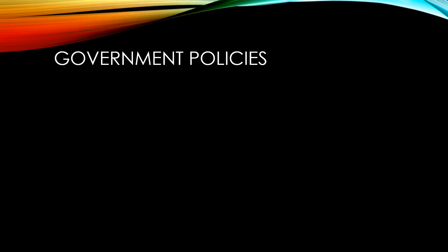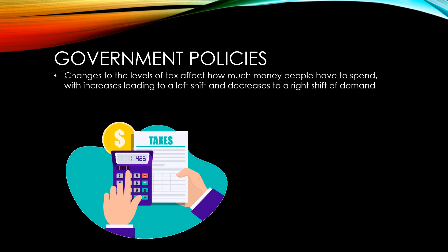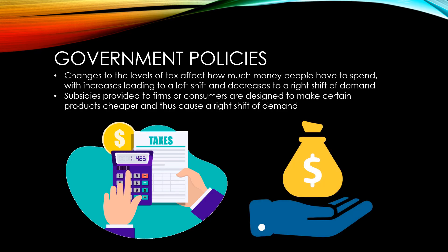The government sets the level of tax that consumers have to pay, which determines how much money they have left to spend on other goods and services. If taxes are raised, they have less money left and there is a left shift of demand for other products. If taxes are lowered, there is a right shift of demand. Sometimes the government also provides subsidies to firms or consumers to make products cheaper, leading to a right shift of demand — for example, subsidies on electric cars to lower the amount of pollution in the atmosphere.